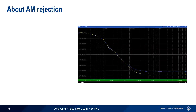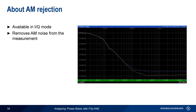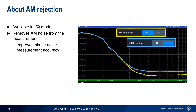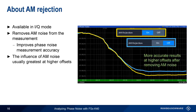Another useful feature enabled by IQ mode is AM rejection. AM rejection can remove much of the AM noise from phase noise measurement results, increasing measurement accuracy. For example, one trace shows results without AM rejection enabled, and another shows results after AM rejection has been enabled. Unlike the drifting VCO example, the effects of AM noise are usually greatest at higher offsets — that is, further away from the carrier.